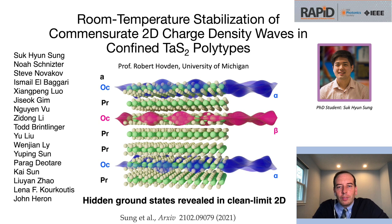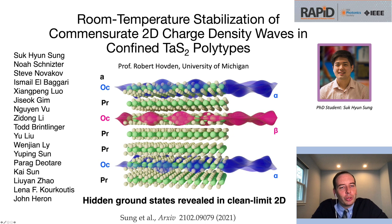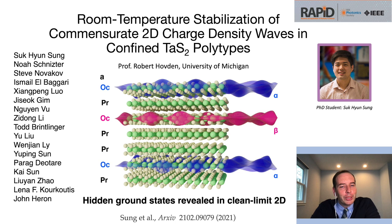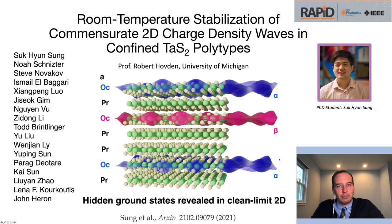In conclusion, we see a new route to accessing hidden ground states through clean-limit mixed polytype heterojunctions. Tantalum disulfide changes to a twin commensurate structure at room temperature, restoring long-range order of both the room temperature and high temperature phases. The work is discussed in our recently posted archive paper, with a long list of collaborators to acknowledge — in particular Suk-yeon Sung, the student who championed this work. Thank you for the opportunity to speak to this audience.